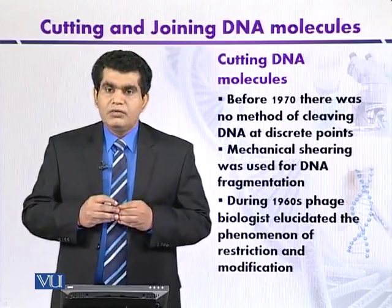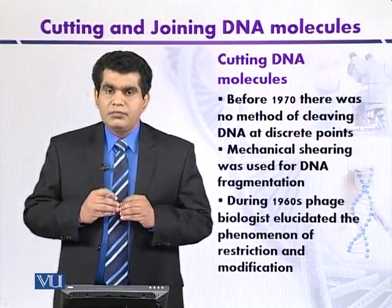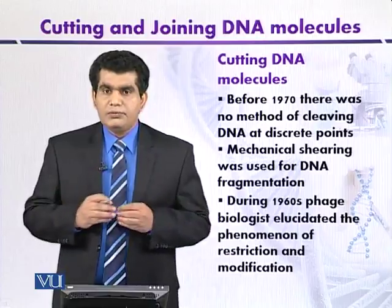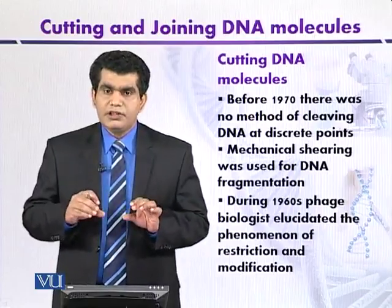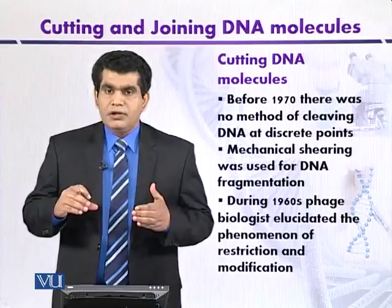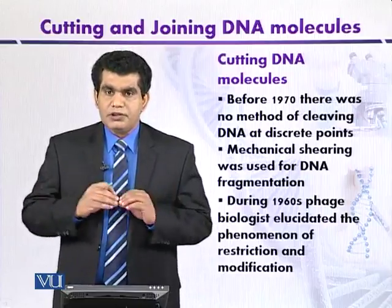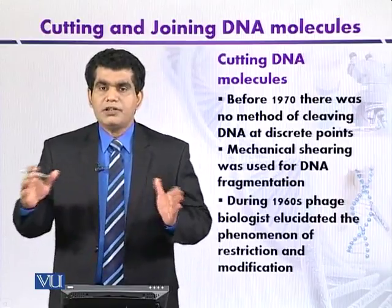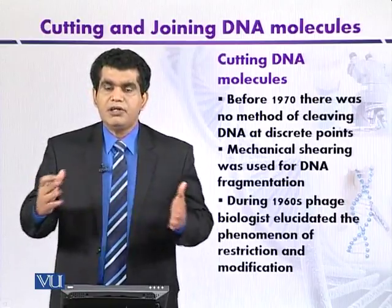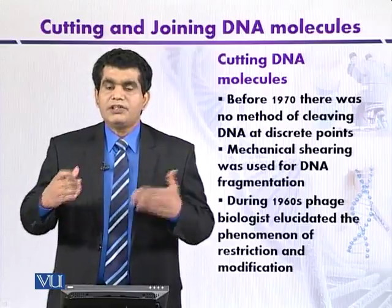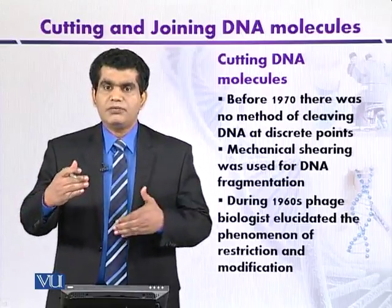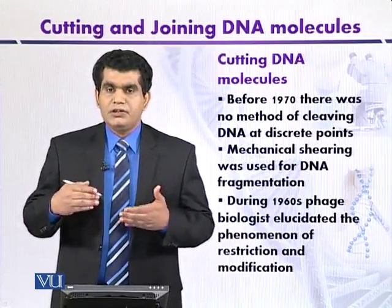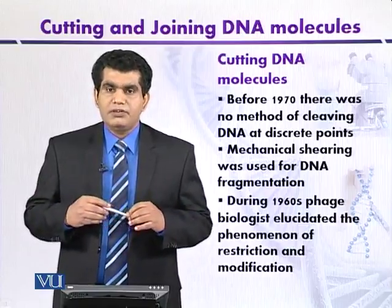The reason the restriction enzyme isolated from E. coli K12 had no value was that the cutting was random. It could randomly cut the DNA fragments, and when cutting is random, the desirable fragments are not obtained. Because of this random cutting, it was not practically useful in the field of gene manipulation.